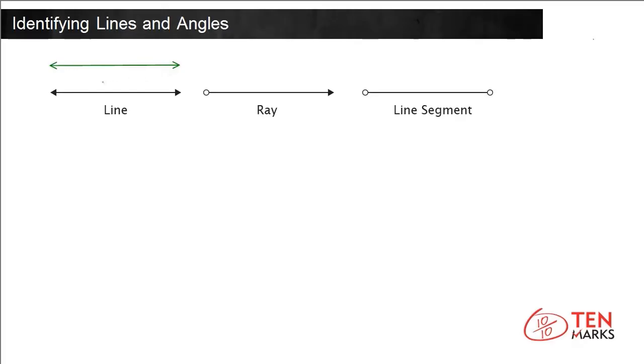A ray is a part of a line with one end point fixed. It extends continuously in the other direction. Here is a ray going in one direction with an end point at the other end.